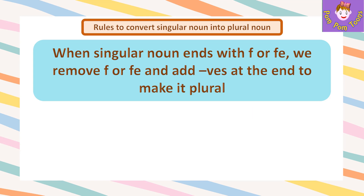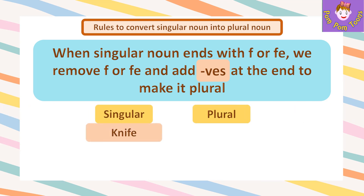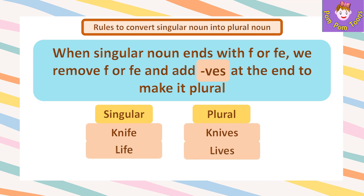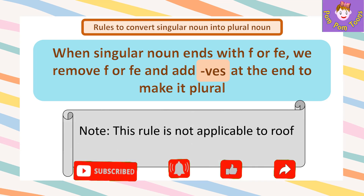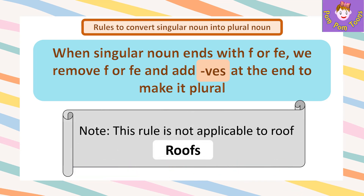When a singular noun ends with F or FE, we remove F or FE and add VES at the end to make it plural. For example, knife → knives, life → lives, loaf → loaves. This rule is not applicable to roof — its plural form is roofs.